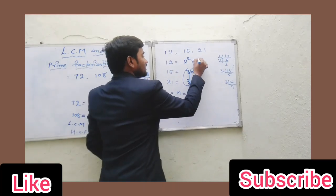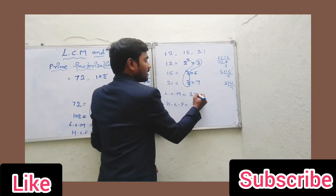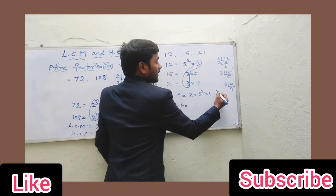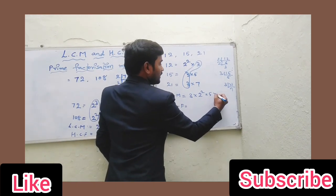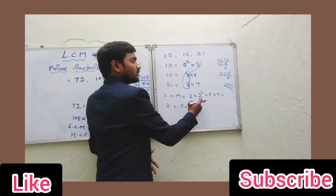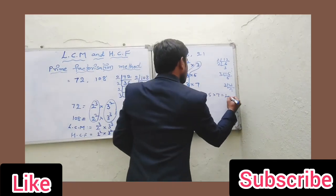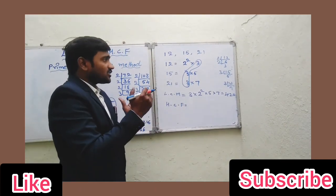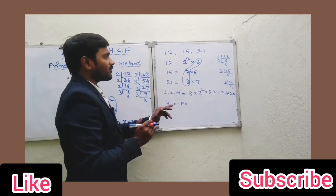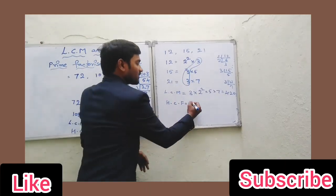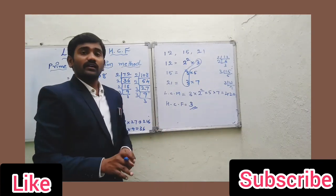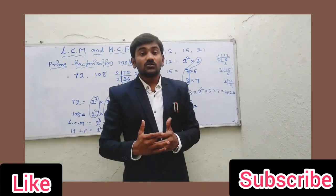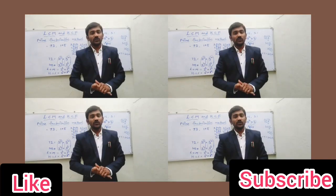For 12, 15, and 21 using the power method: for LCM, the only common factor is 3, so we take 3 and all non-common factors 2² × 5 × 7, giving LCM = 420. For HCF, the lowest power of the only common factor 3 is 3 itself, so HCF = 3.